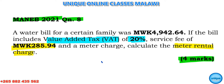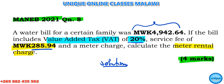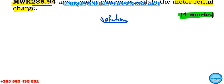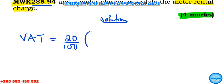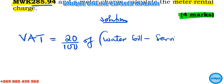So what we're going to do here, we need to calculate VAT — 20% VAT. Note that this 20% is not 20% of the total water bill. We need to subtract the service fee first. So remember: VAT is equal to 20%, which is 20 over 100, of the water bill minus the service fee.